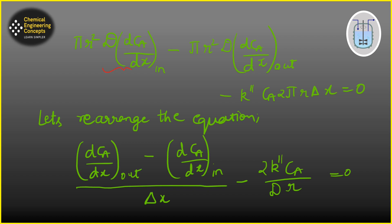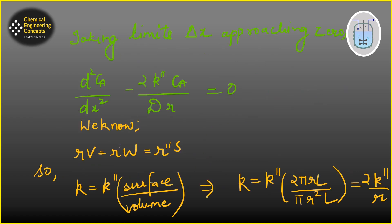We can now write the material balance in mathematical form. This term represents molecular diffusion in, this term represents diffusion out, and this term is the reaction rate step. Rearranging and taking the limit as Δx approaches zero gives us a simple second-order ordinary differential equation.